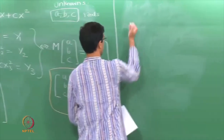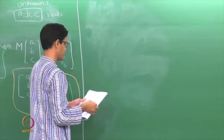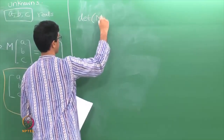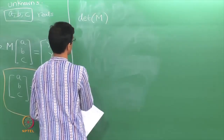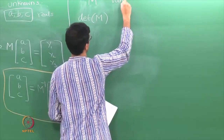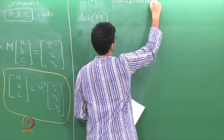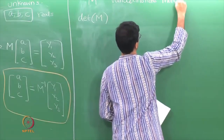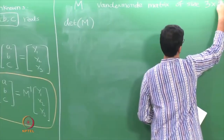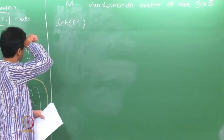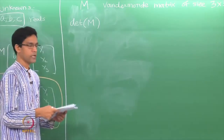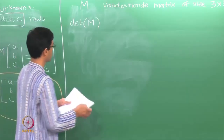Finding the inverse of a 3×3 matrix is somewhat trickier than for a 2×2 matrix. We will need, as before, the determinant of this matrix M. This particular matrix M, which has the form 1, x₁, x₁² and so on, has a name — it is a very special matrix called the Vandermonde matrix, of size 3×3. There is a Vandermonde matrix of any size n×n.